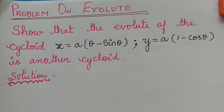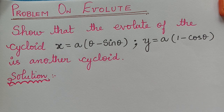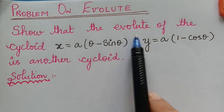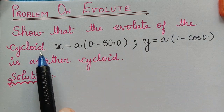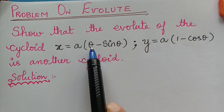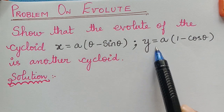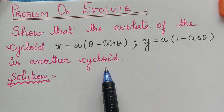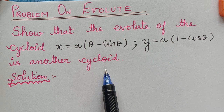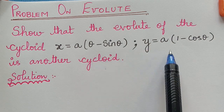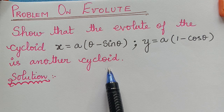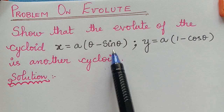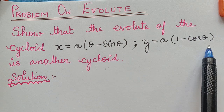Dear students, under the topic radius of curvature, here we have a problem on evolute. The question is: show that the evolute of the cycloid x = a(θ − sin θ), y = a(1 − cos θ) is another cycloid. In order to show this, first of all we should find the center of curvature of the given cycloid.